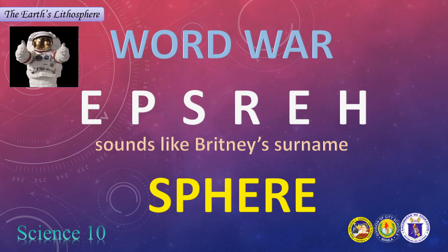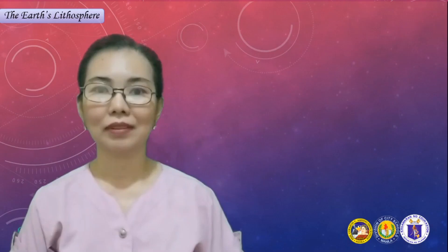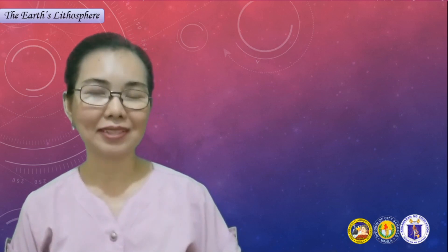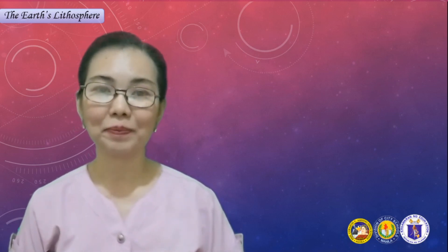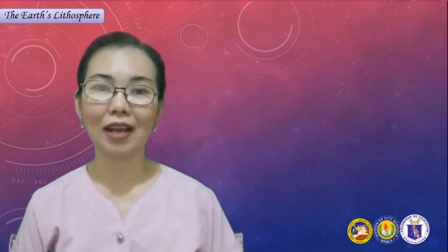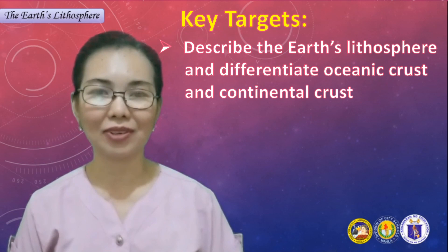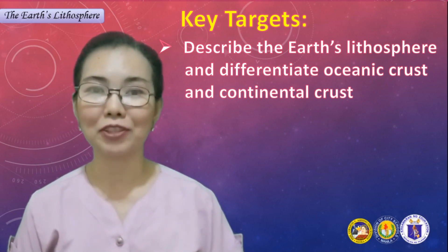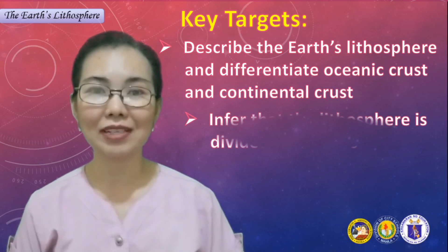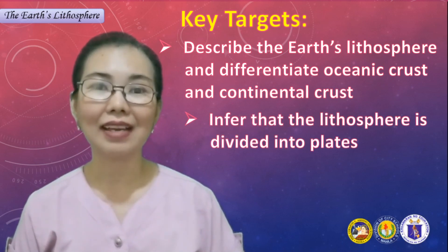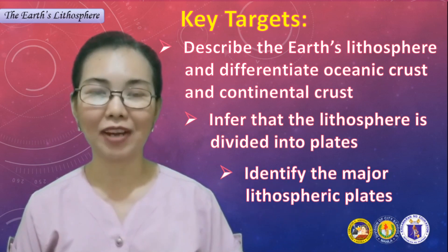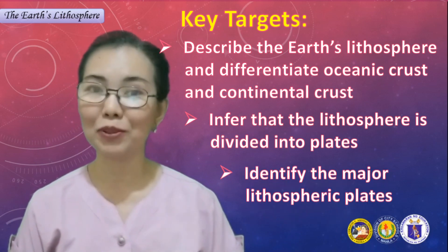Did you get four correct words? At the end of this lesson, you should be able to describe the Earth's lithosphere and differentiate oceanic crust and continental crust. You should also be able to infer that the lithosphere is divided into plates and identify the major lithospheric plates. Let's keep the ball rolling.